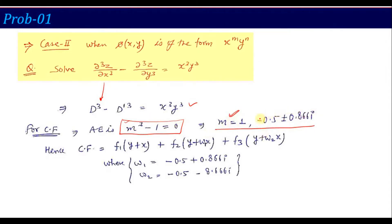Since all roots are different, the CF is: f₁(y + x) + f₂(y + ω₁x) + f₃(y + ω₂x), where ω₁ = −0.5 + 0.866i and ω₂ = −0.5 − 0.866i. The auxiliary equation process — substituting D→M, D'→1, finding roots, writing the CF — is the same as we have seen before.